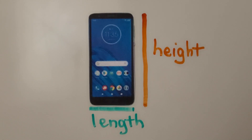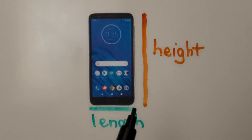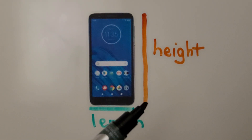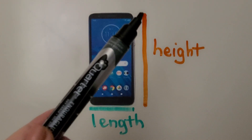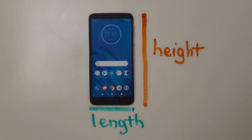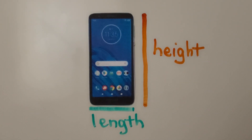We can measure the length of this phone by going from side to side, and we can measure its height by going from bottom to top. We can also measure this phone by its weight — we can hold it in our hand to feel if it's heavy or light.